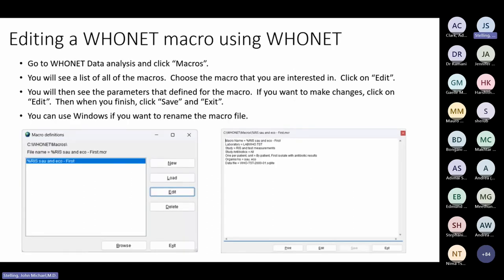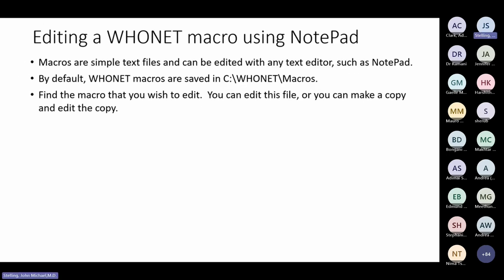That is how to edit a macro using Hoonet's Edit button. You can also use a text editor such as Notepad, WordPad, or Notepad Plus. Macros are simple text files and can be edited with any text editor. By default, Hoonet macros are saved in the Hoonet macros folder. Find the macro you wish to edit, then double-click or open Notepad. You can edit the file or make a copy before editing.